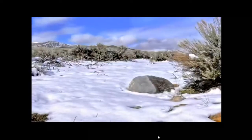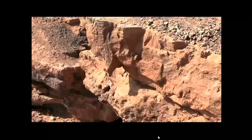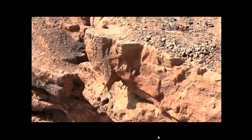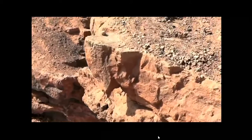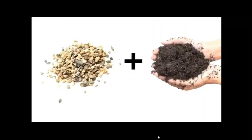Wind, water, and extreme hot and cold temperatures cause rocks to break down over time. The pieces of rock are transported from one place to another through erosion. But wait — soil is not just tiny rocks. It is also made up of decayed plants and animals called humus.